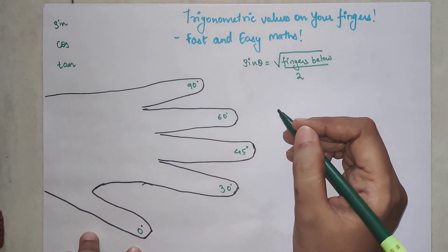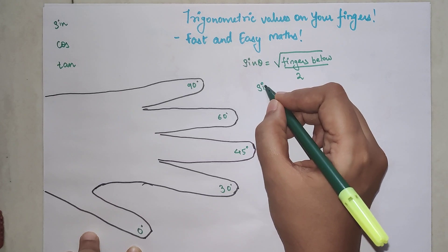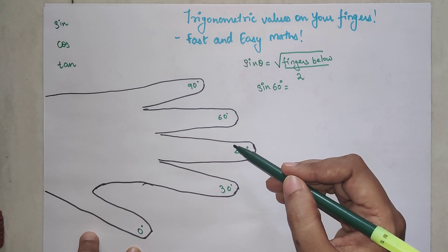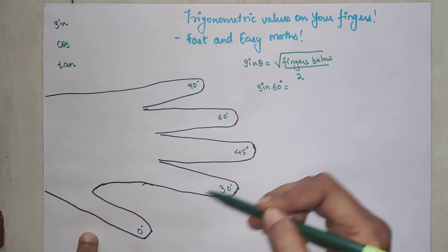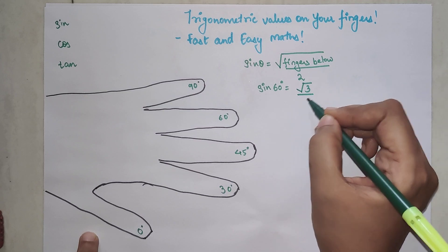So basically if you wanted to find sin of 60 degrees, what are the number of fingers which are below 60? 1, 2 and 3. So basically the answer is root 3 upon 2.